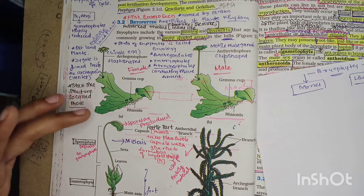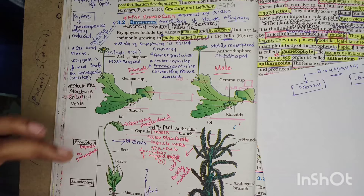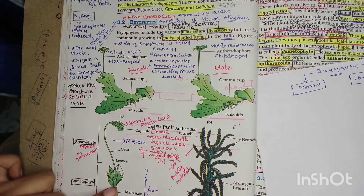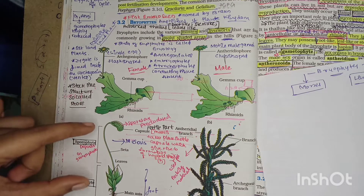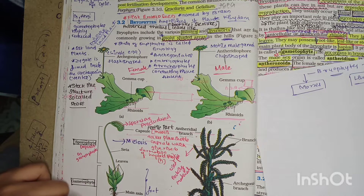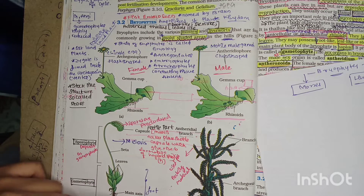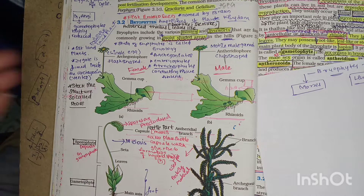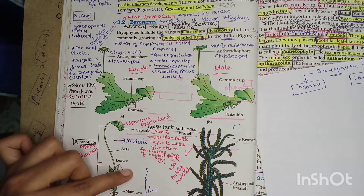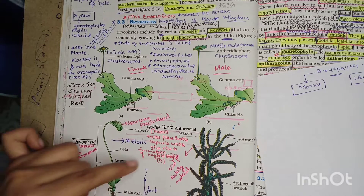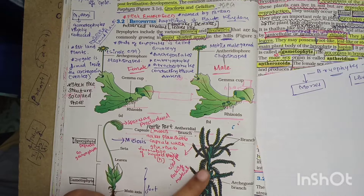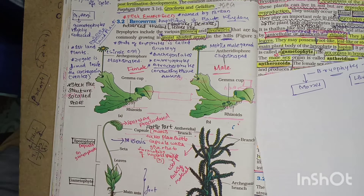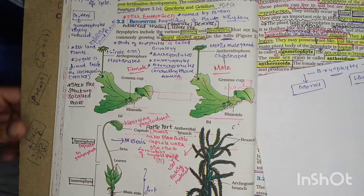Both gametophyte and sporophyte are present on the same plant. The leafy structure is gametophyte, and the capsule and seta are the sporophyte. These are connected with rhizoids at the bottom, which may be unicellular or multicellular. The main axis together with the foot forms the lower part. This picture of Sphagnum is also a moss.